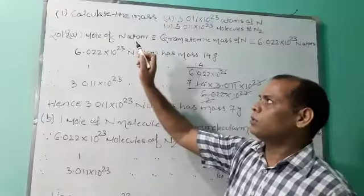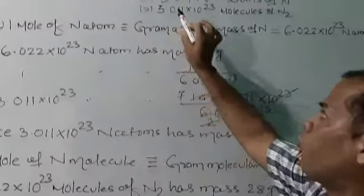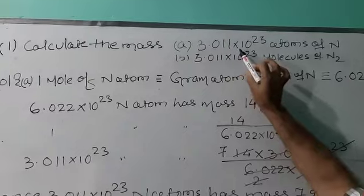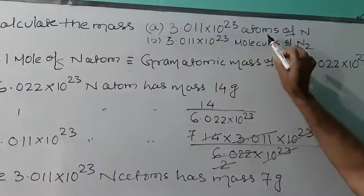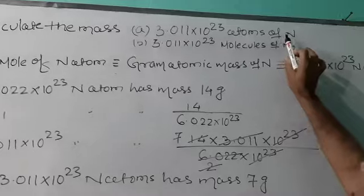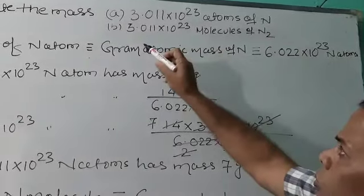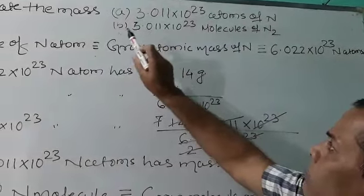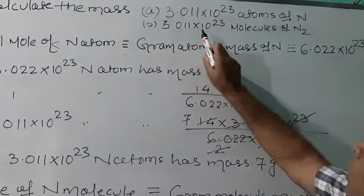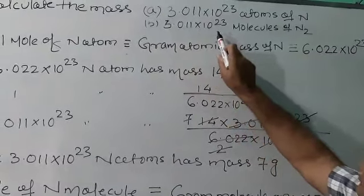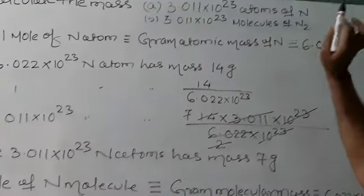The first question: calculate the mass of 3.011 into 10 to the power 23 atoms of nitrogen N. The second question: calculate the mass of 3.011 into 10 to the power 23 molecules of nitrogen.